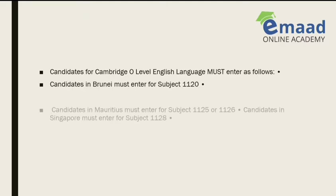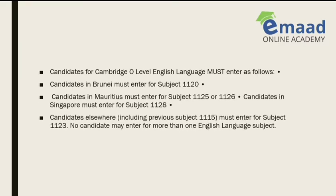If you are from Brunei, Mauritius, or Singapore, you have to use specific English codes other than 1123. But all other students — whether from Africa, Syria, Egypt, Saudi Arabia, India, Pakistan, or Bangladesh — need to use 1123 as your subject code when filling any official form or admission paperwork.